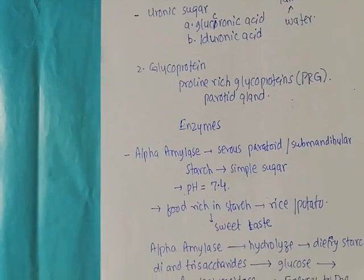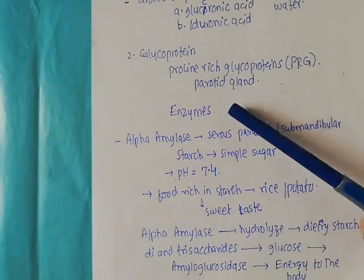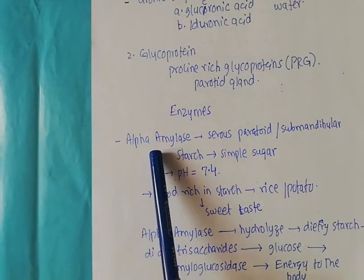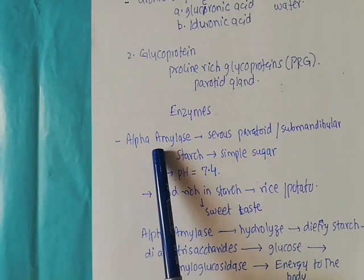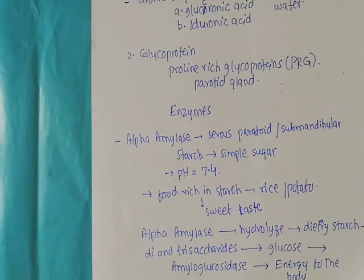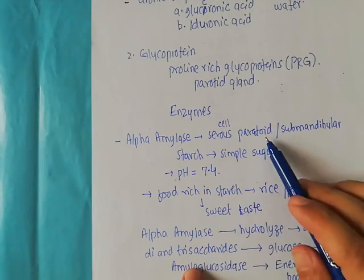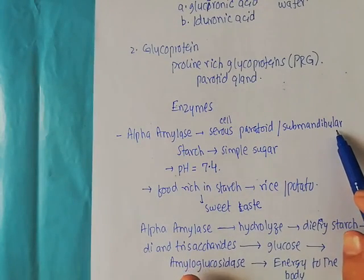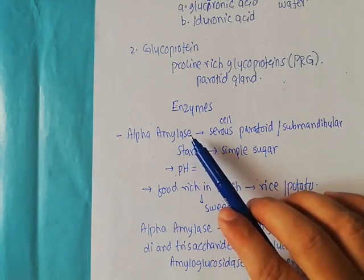In this video we will focus on the important enzymes present in the saliva. The first important enzyme is known as the alpha amylase enzyme. This alpha amylase is actually released by the serous cells of the parotid and the submandibular salivary glands, so these two types of major salivary glands are the producers of alpha amylase.